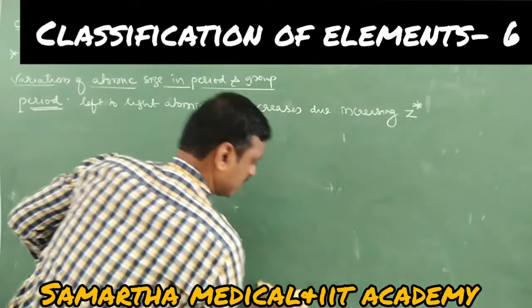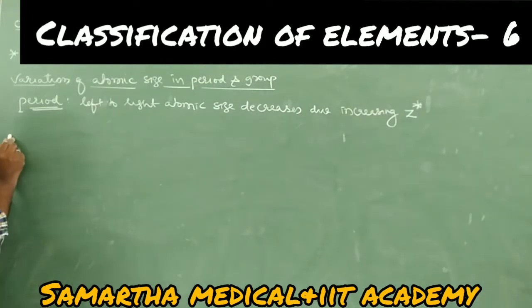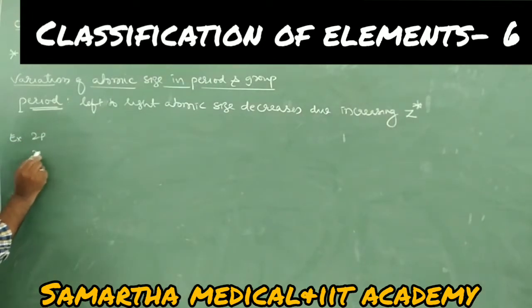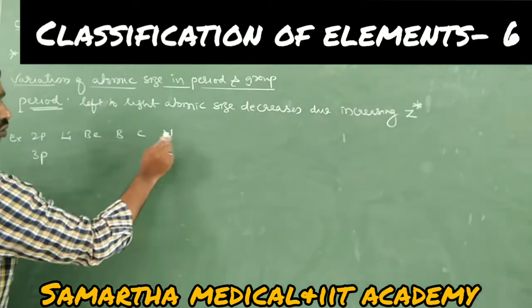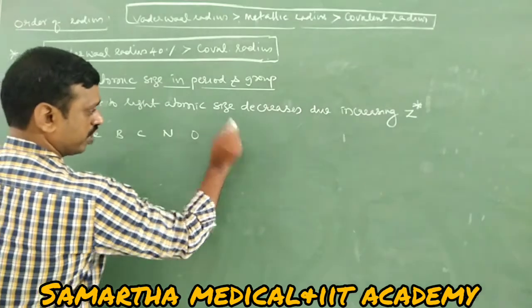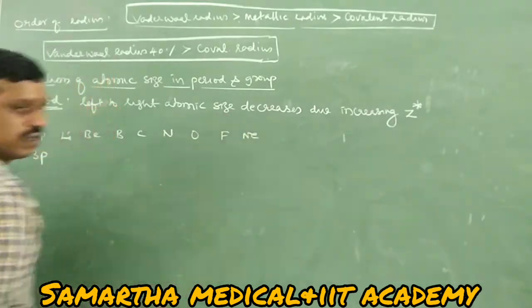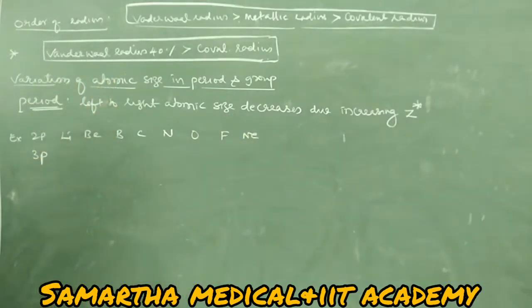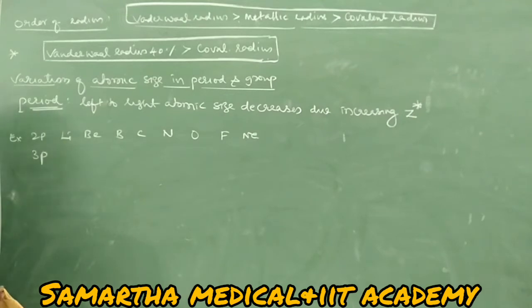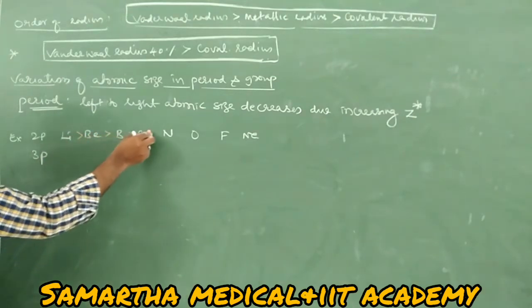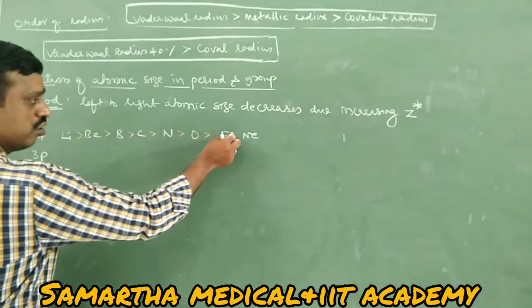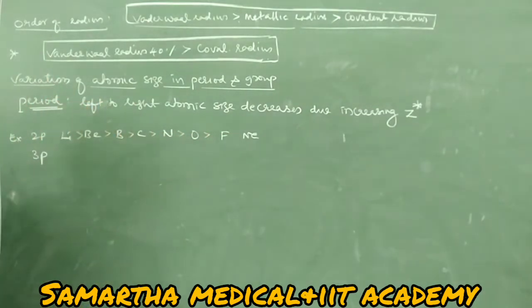Example: take second period elements — lithium, beryllium, boron, carbon, nitrogen, oxygen, fluorine, neon. Atomic size gradually decreases. Lithium has more than beryllium, which has more than boron, carbon, nitrogen, oxygen, fluorine.